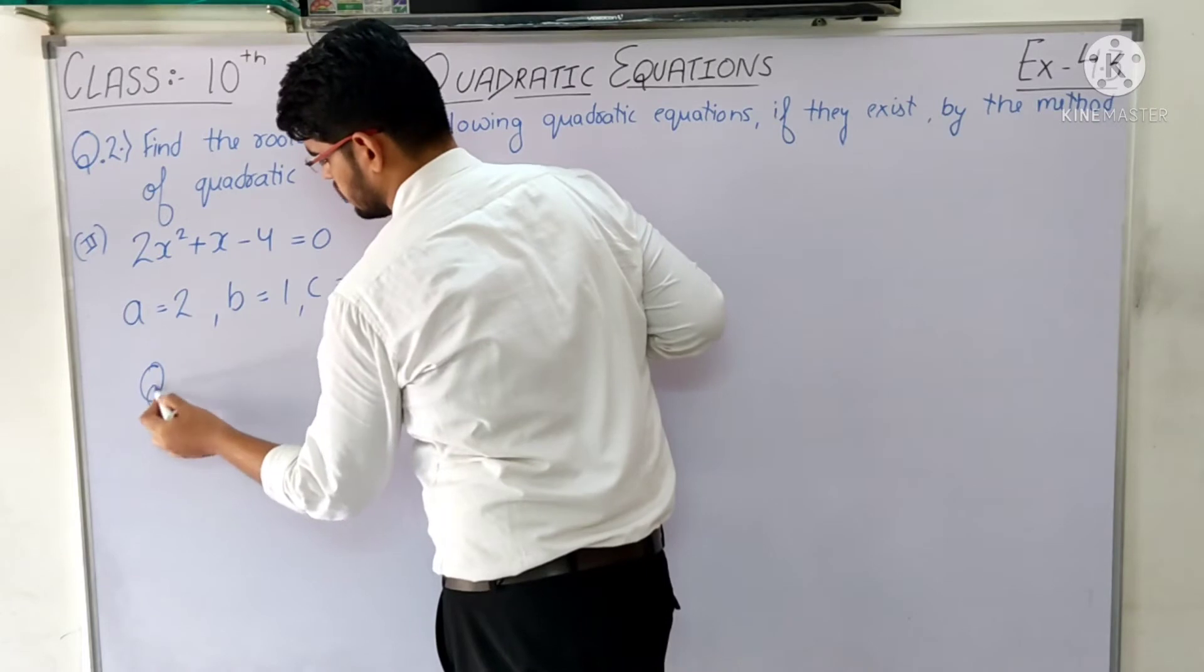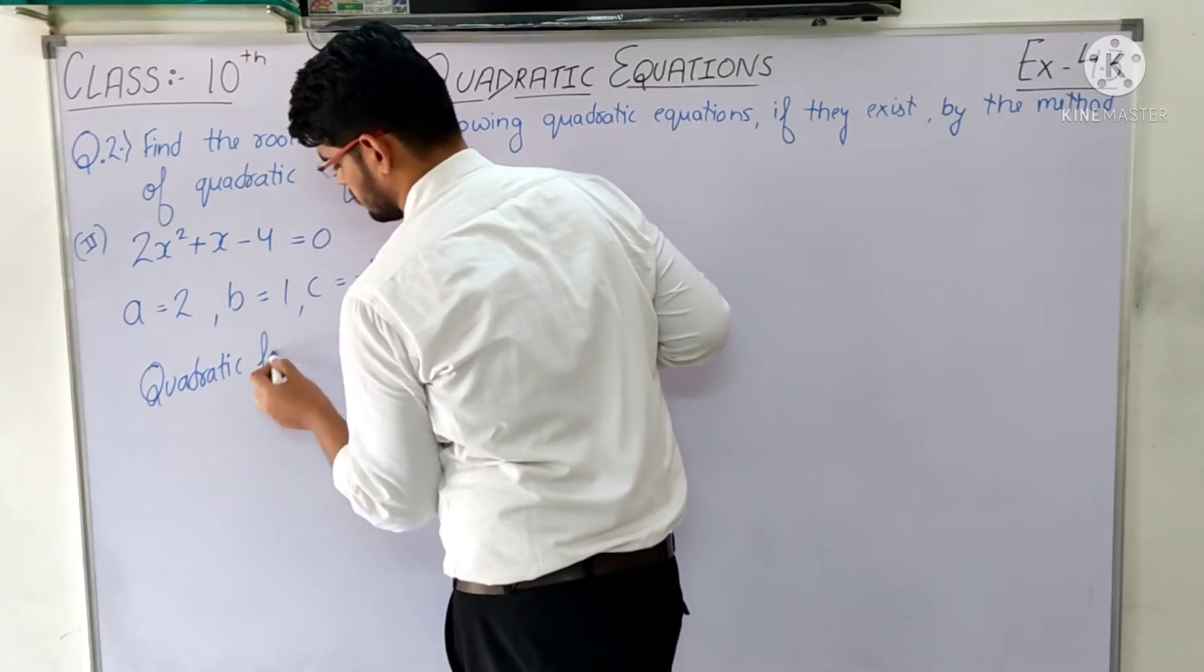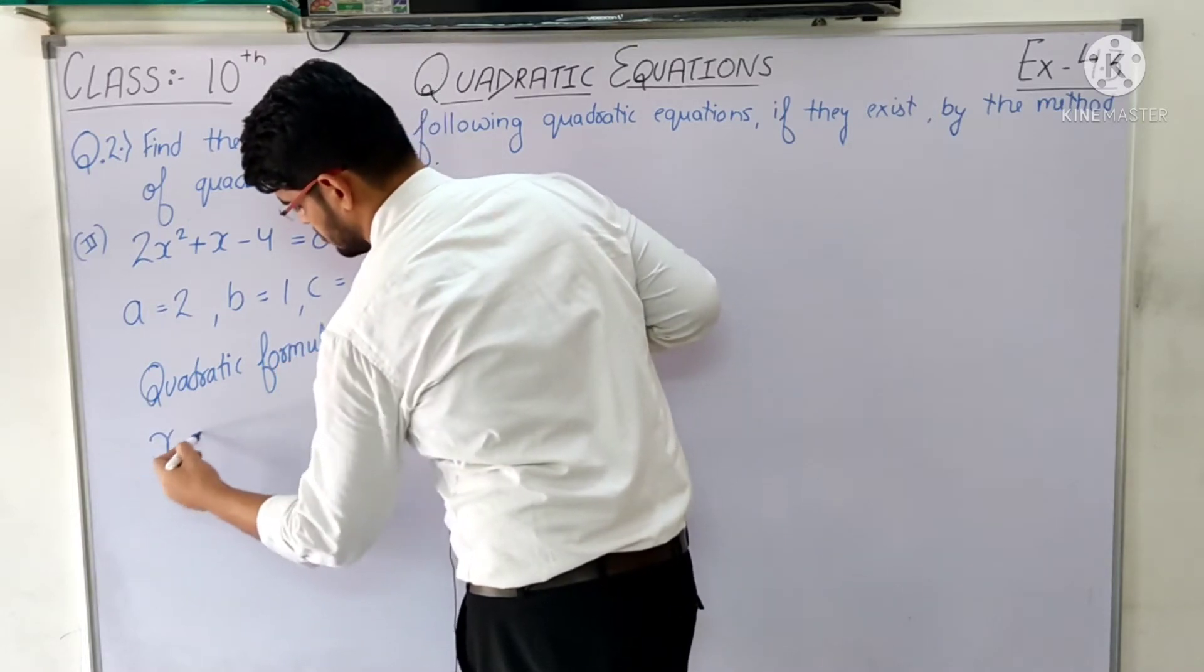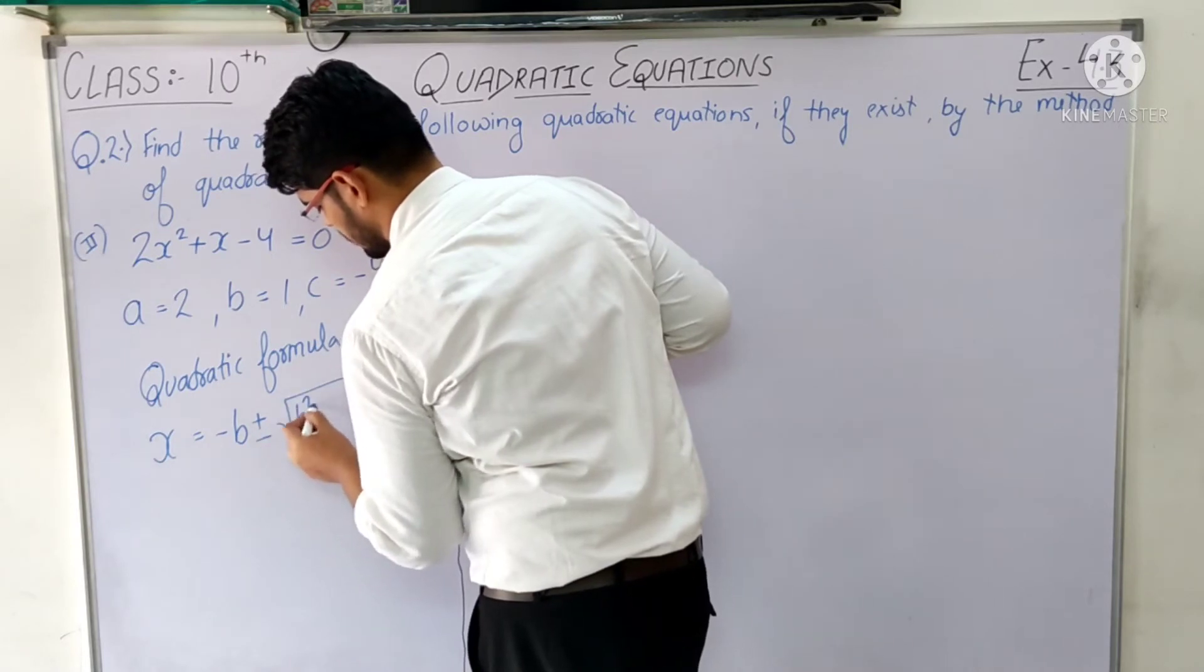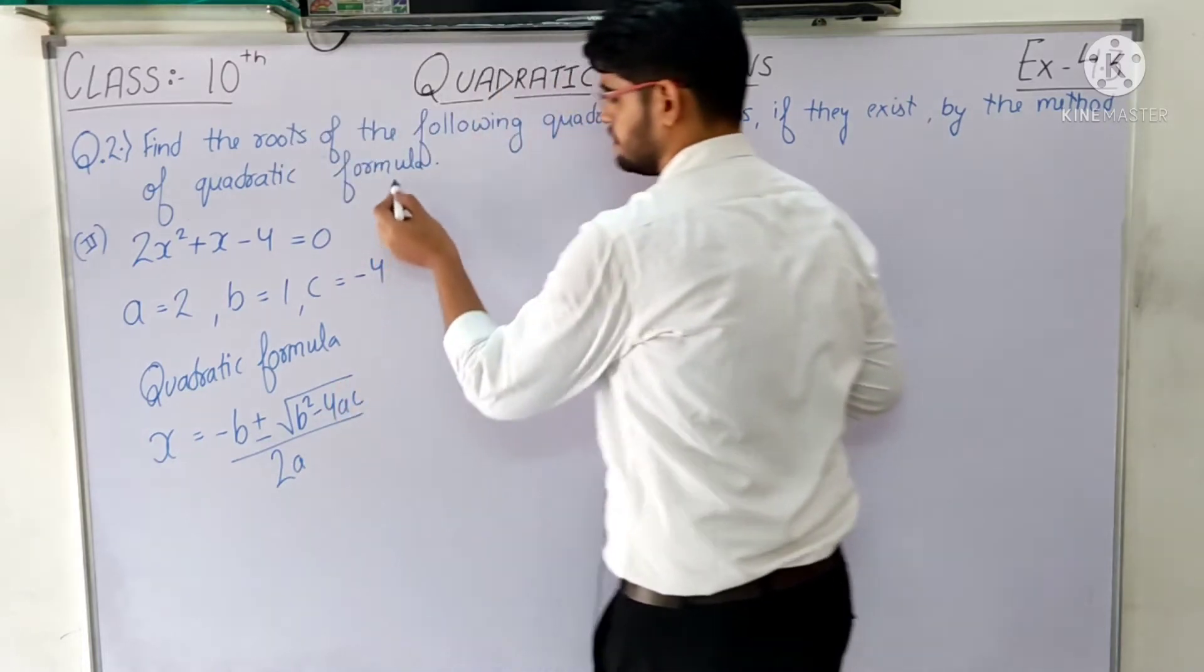Now the quadratic formula is: x = (-b ± √(b² - 4ac)) / 2a. This is the quadratic formula. We have to put these values.